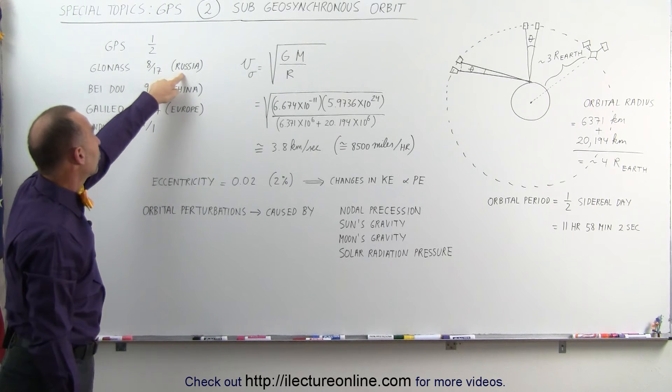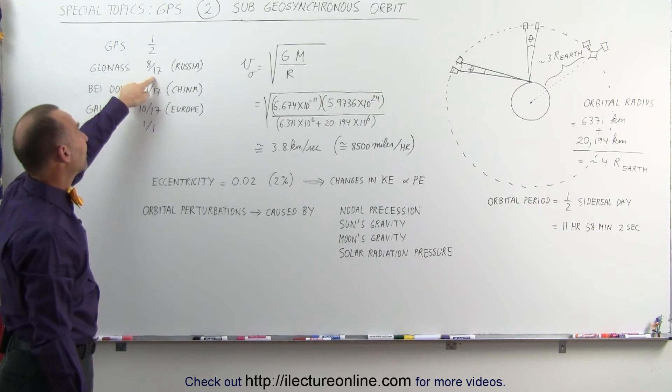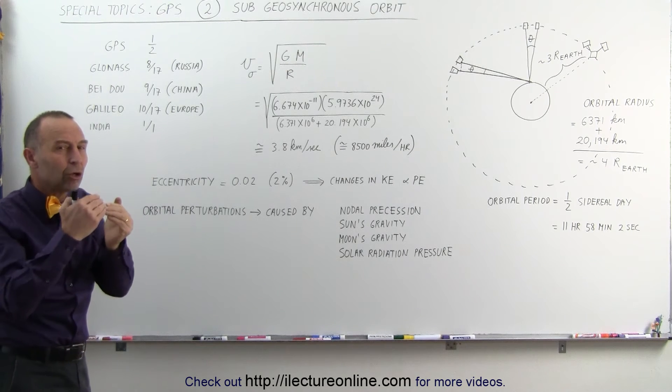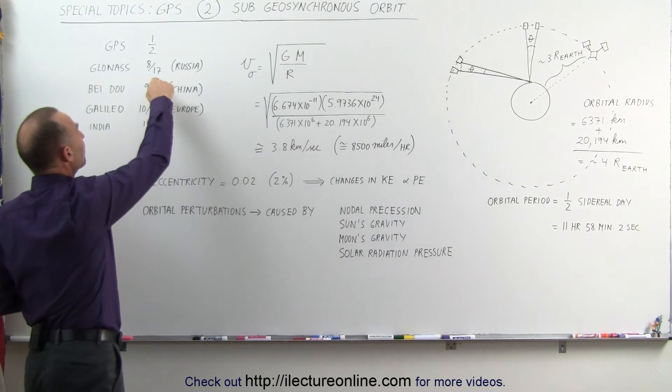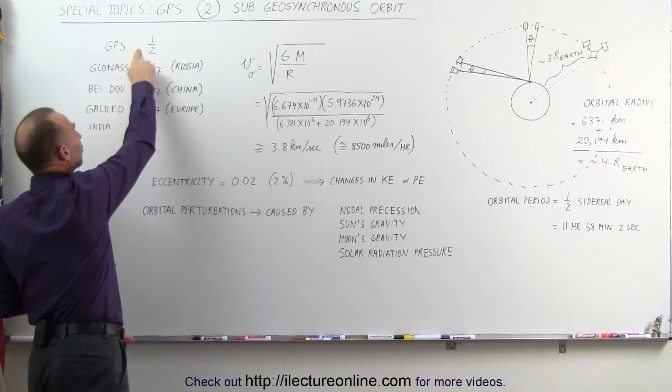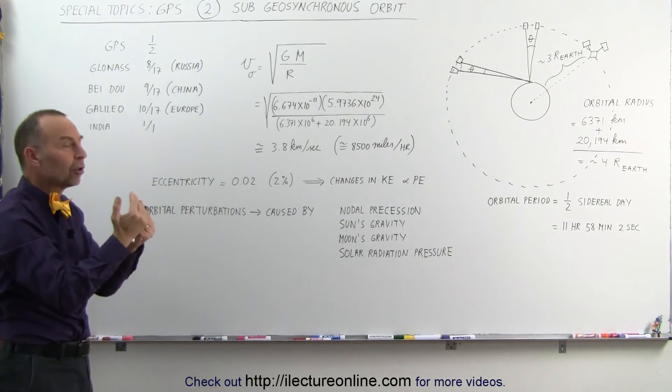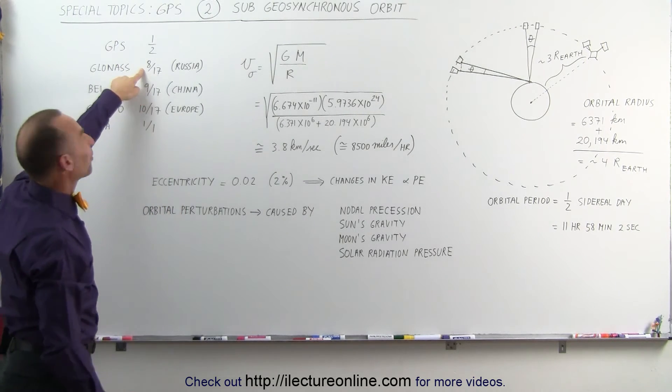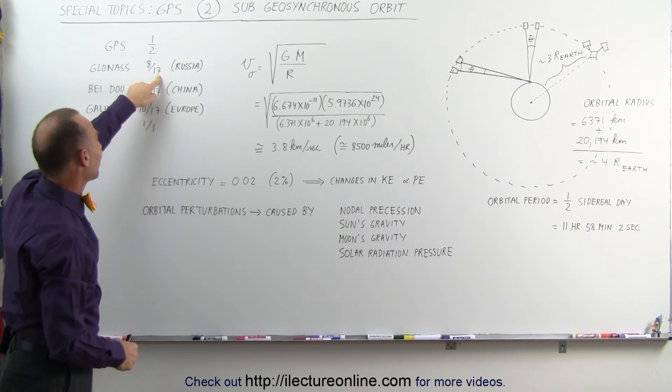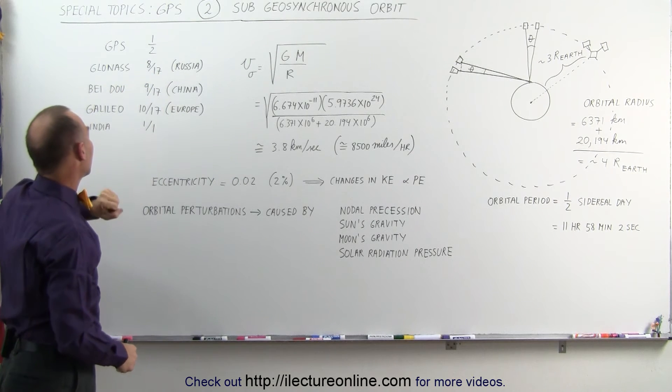GLONASS, which is a Russian GPS system, it's on an 8-17s. In other words, it's a little bit closer in such a way that it makes more trips relative to our GPS system, so it's actually a little bit closer than our system, and so for every eight rotations of the Earth, their satellites make 17 trips around the Earth.